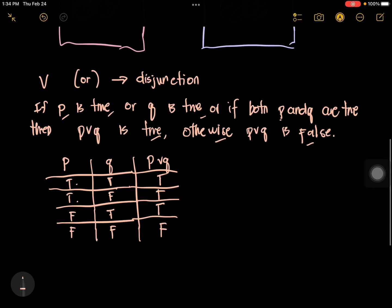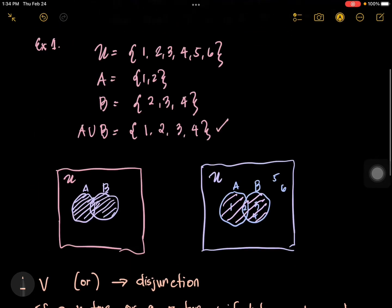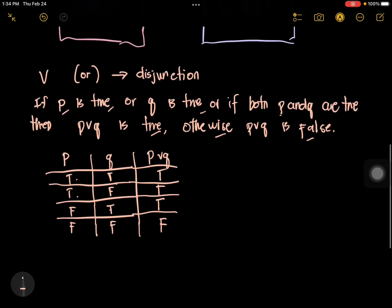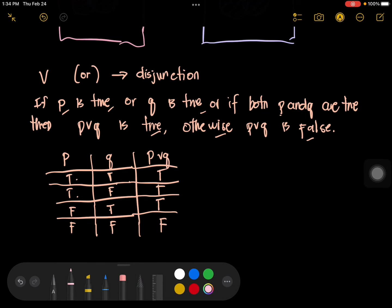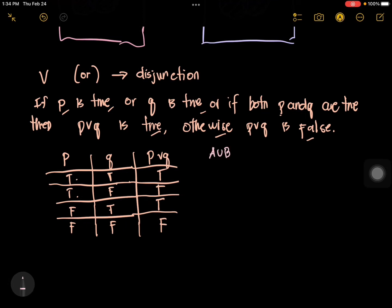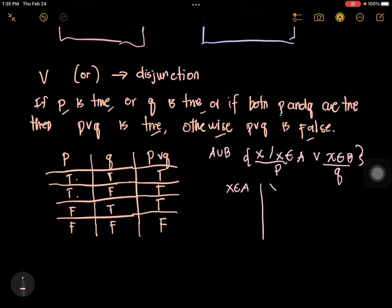Now, comparing this to the definition of the union set. The definition is: A union B is the set of X such that X is an element of A or X is an element of B. You have the first proposition P — 'X is an element of A' — and the second proposition Q — 'X is an element of B.' The combination is: X is an element of A, or X is an element of B.